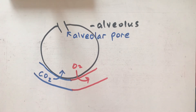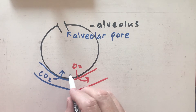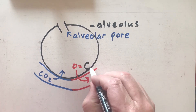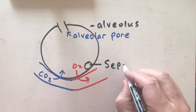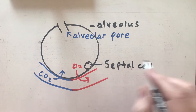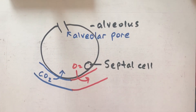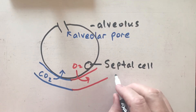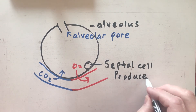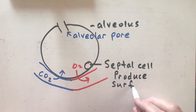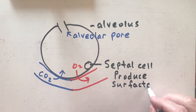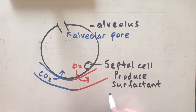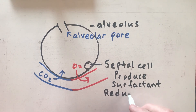There are also some different types of cells inside the alveolus. One is called a septal cell. You don't have just one — you have multiple septal cells. What septal cells do is they produce surfactant. Surfactant reduces surface tension, which makes it easier to get gas exchange.